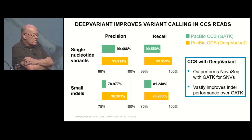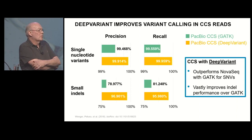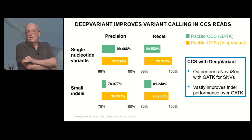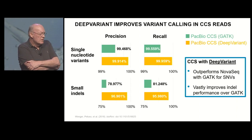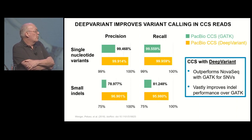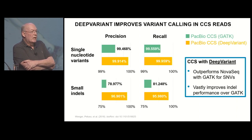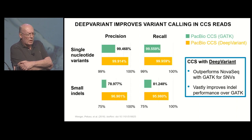The conclusion was that this made a big difference, because the GATK models, as good as they are for short reads, really aren't tuned to the characteristics of long reads. Comparing the two, you see a reasonably good improvement on single nucleotide mismatches and a much bigger increase in performance relative to small indels.